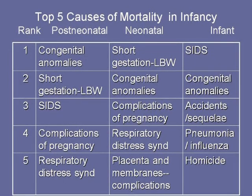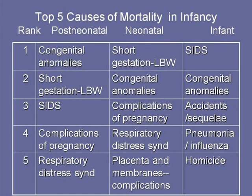Looking at causes of mortality in infancy — patients less than a year of age — during the neonatal period the number one cause is low birth weight and prematurity, followed by congenital anomalies, complications of pregnancy, respiratory distress syndrome, and placenta and membrane complications. After one month of age, the top cause is sudden infant death syndrome, followed by congenital anomalies, accidents, pneumonia, influenza, and homicide.